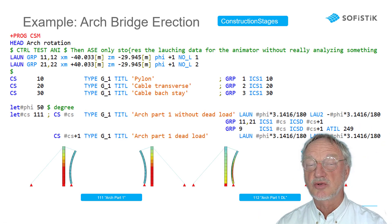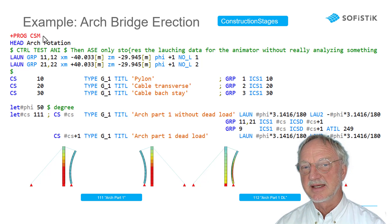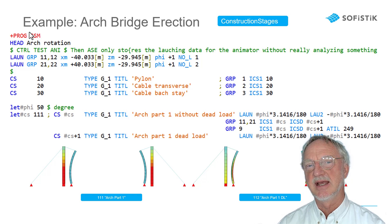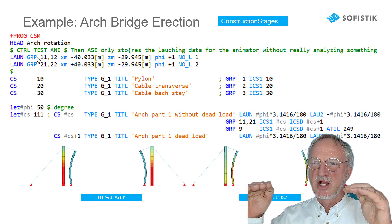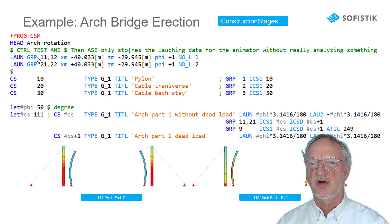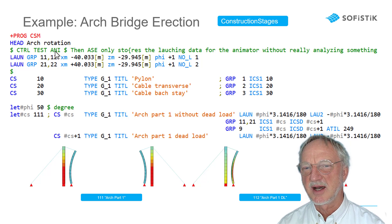Now, how to control this for our arc bridge erection? We make it with CSM. And in CSM we usually can have two parts of the bridges launch from the right and from the left. And here we have two launching commands.